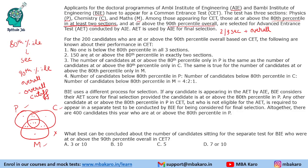150 are at or above the 80th percentile in exactly two sections, so the sum of those regions is 150. The number of candidates at or above the 80th percentile only in P equals only in C equals only in M — these three values are equal.